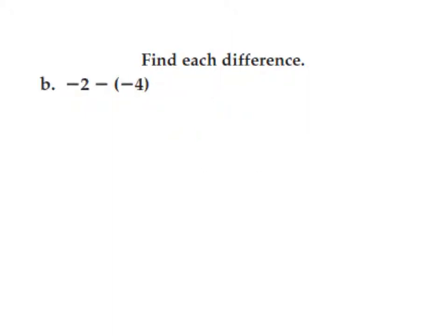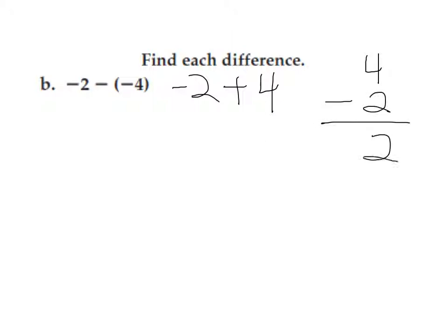Find each difference. Problem B: negative 2 minus negative 4. Using the additive inverse: negative 2 stays the same, subtraction turns to addition, and negative 4 changes to its opposite, which is positive 4. I notice two different signs, so I'm going to subtract — put 4 on top and 2 on the bottom. Subtract, I get 2. Checking the sign: 4 has the largest absolute value and is positive, so 2 is positive. That is the answer.